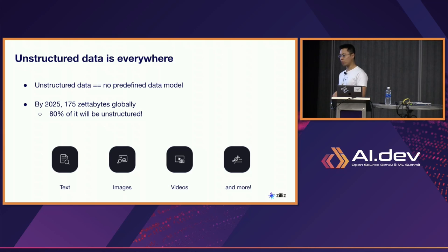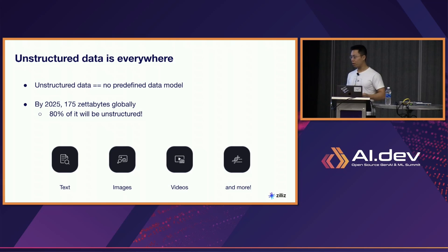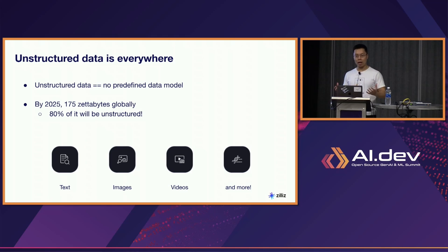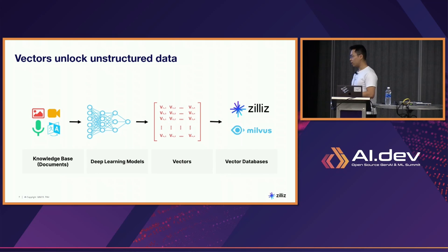If you think of an employee database, for example, you could have things like ID number, date of birth, name, and address — all stored in individual columns in that relational database. But as we've moved into the mobile era and the IoT era, where data is coming in from a variety of different sources — image data, video data, and so on — that is when we really come to see the need for a way to store, index, and search these large quantities of unstructured data. Vectors are what unlock a lot of this unstructured data analysis for us.